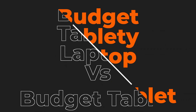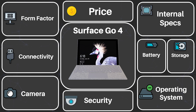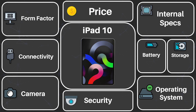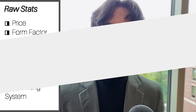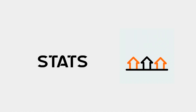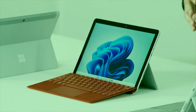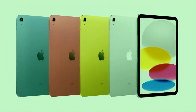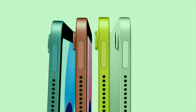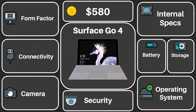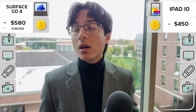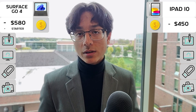Budget tablety laptop versus budget tablet: the Microsoft Surface Go 4 versus Apple iPad 10. Let's compare them. The Surface Go 4 is Microsoft's new and improved tablety laptop that starts at $570, while the iPad 10 is Apple's entry-level tablet with many features, starting at $450. Given that these two have different prices and different purposes, we'll see what happens in this comparison.